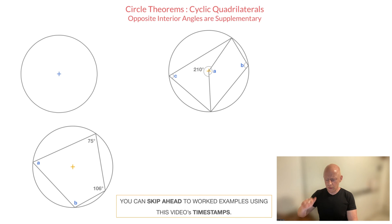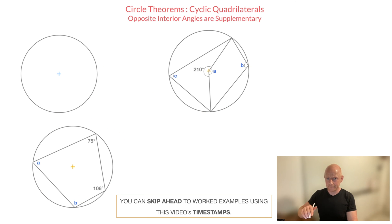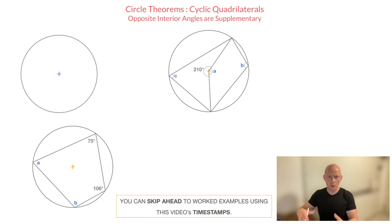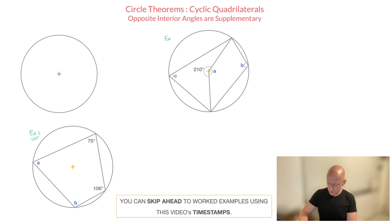Looking at the screen here, you can see that I've placed three circles, and for the moment it looks a little messy, but here's the idea. I'm going to use the empty circle you see here to illustrate what cyclic quadrilaterals are, as well as what this rule actually tells us. Once that's done, the other two circles are the examples I'm going to be working through. The bottom circle will be example one, and this circle over here will be example two.